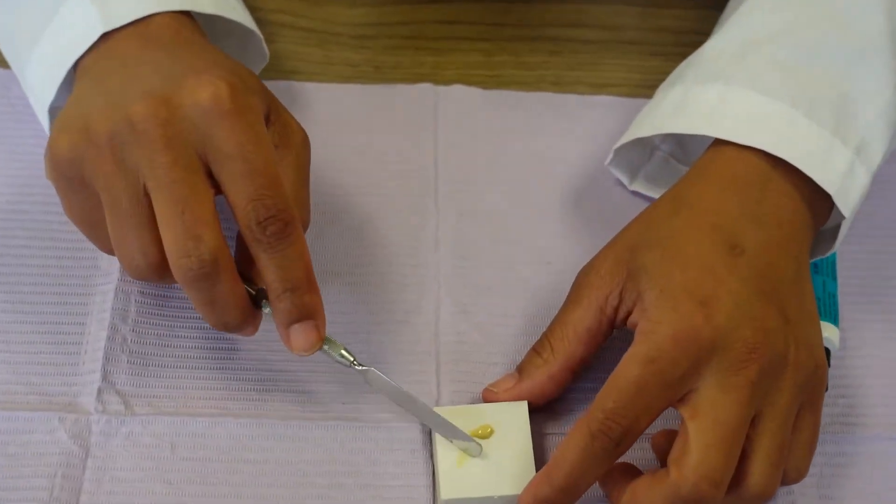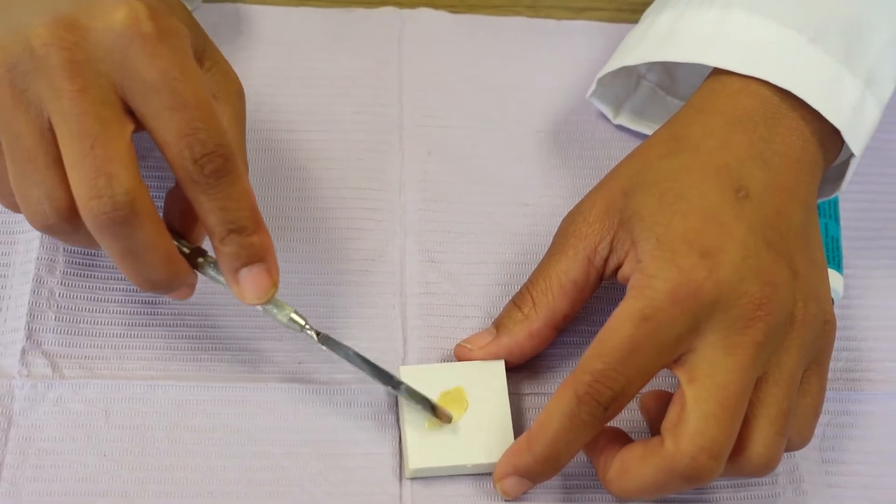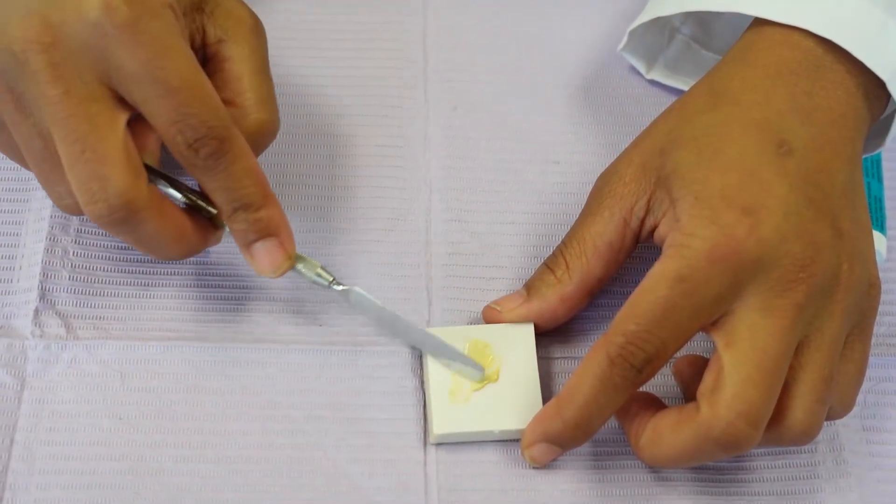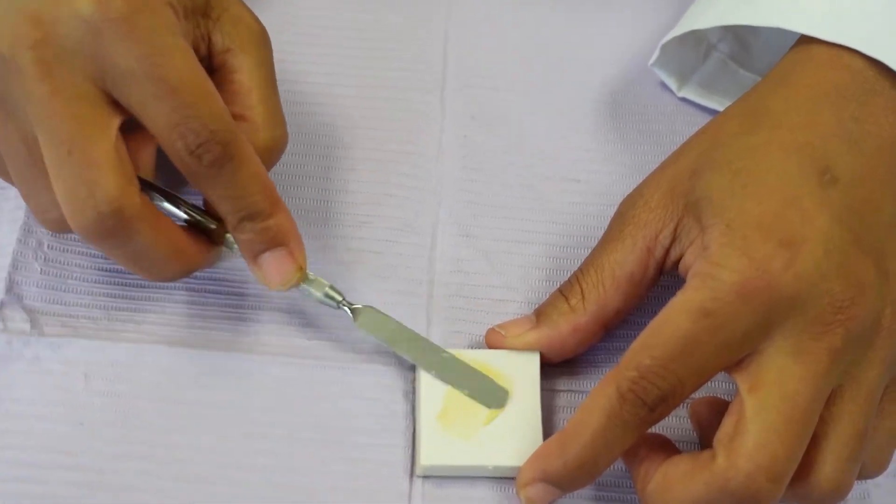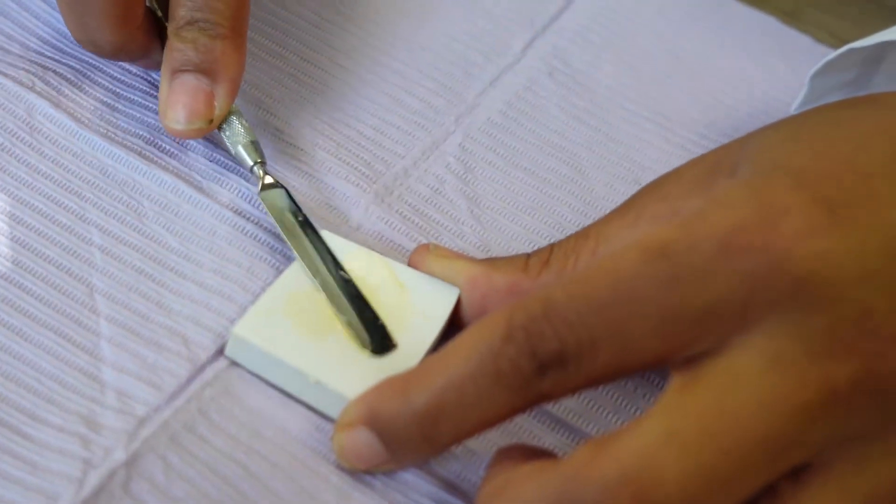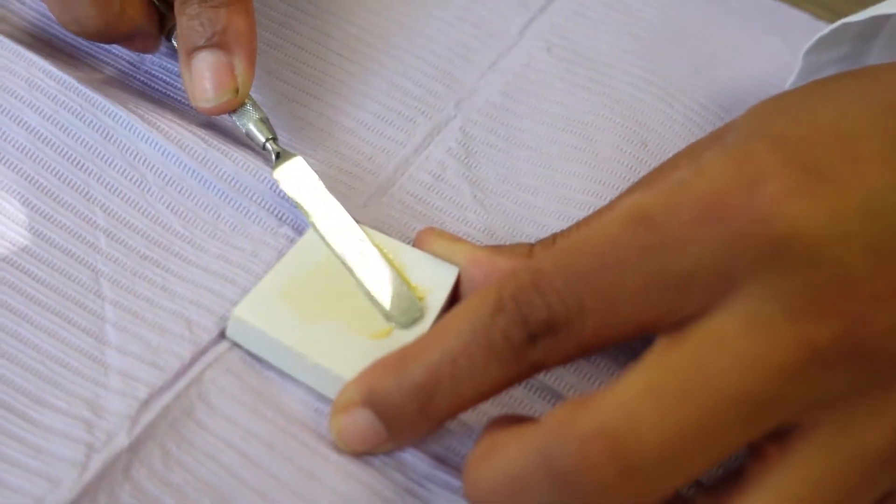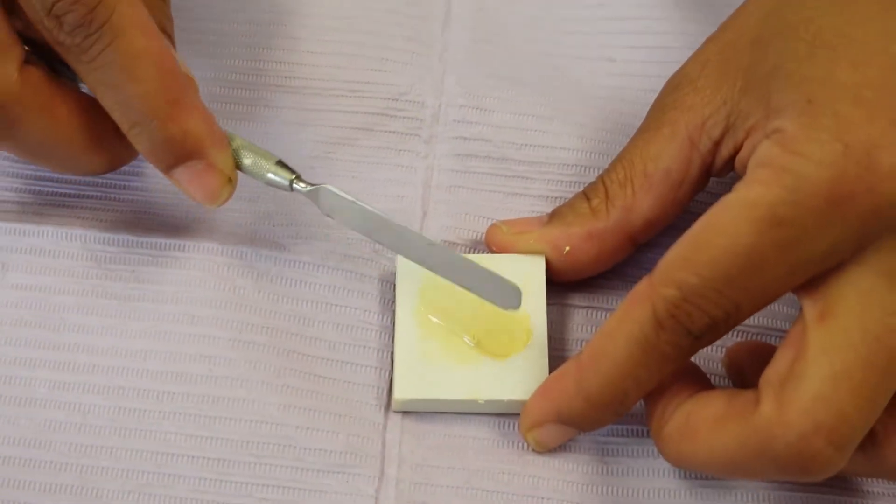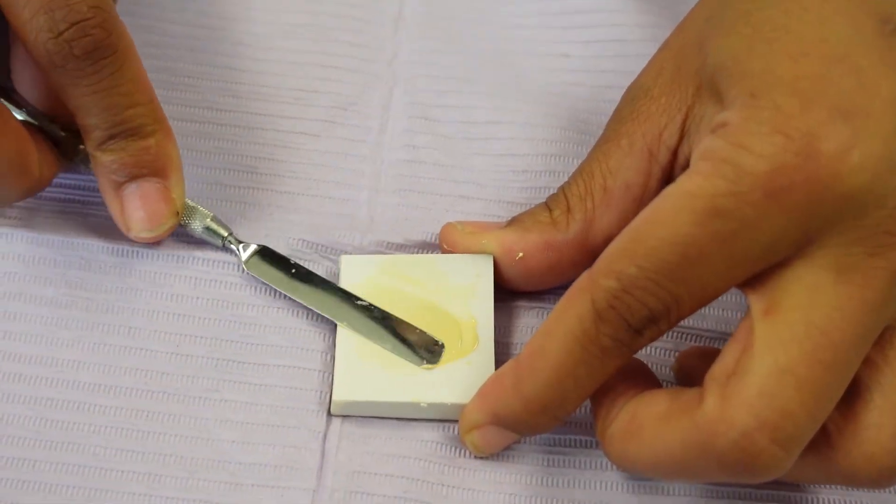We're going to take it and mix it together. You see how I'm doing this with the spatula? I'm going back and forth. This is how you mix. I like to see assistants mix like this - this is when you know what you're doing.